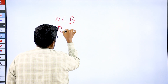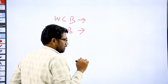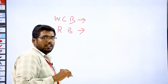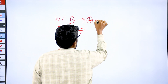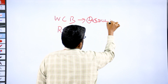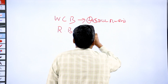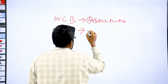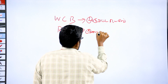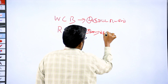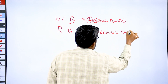In the last class, we covered WCB and RB. WCB is the whole circle bearing. RB is the reduced bearing — the symbol of R being reduced bearing. This symbol is the whole circle bearing.